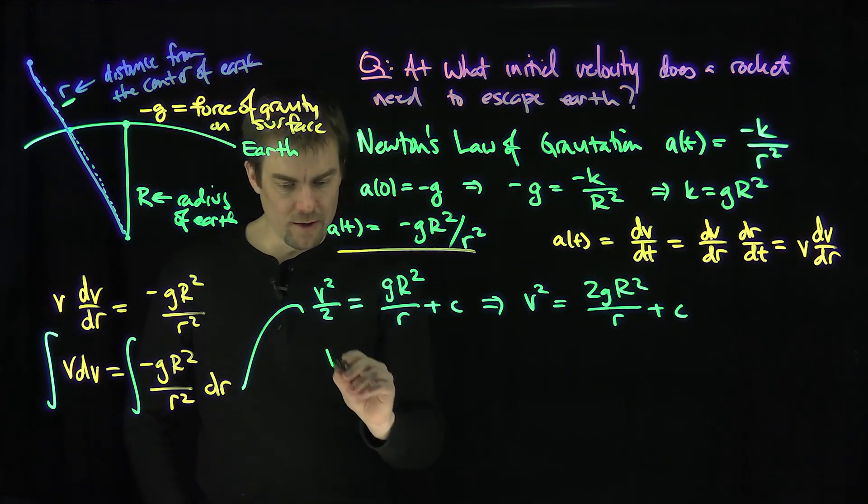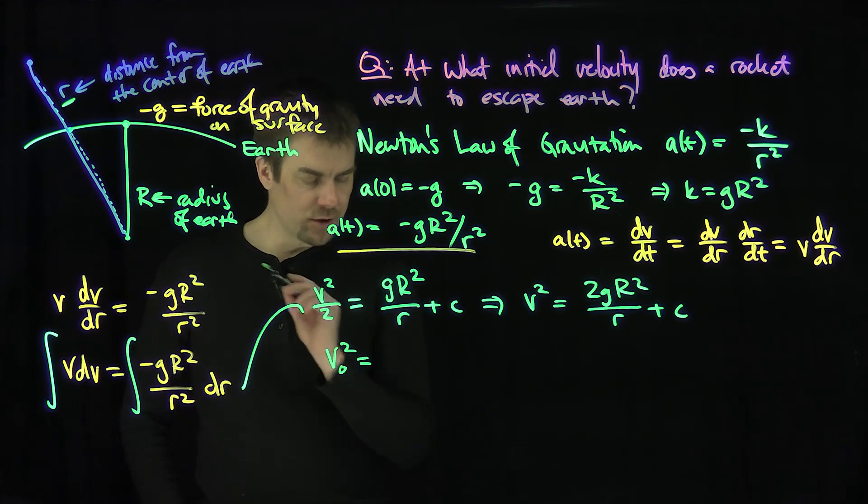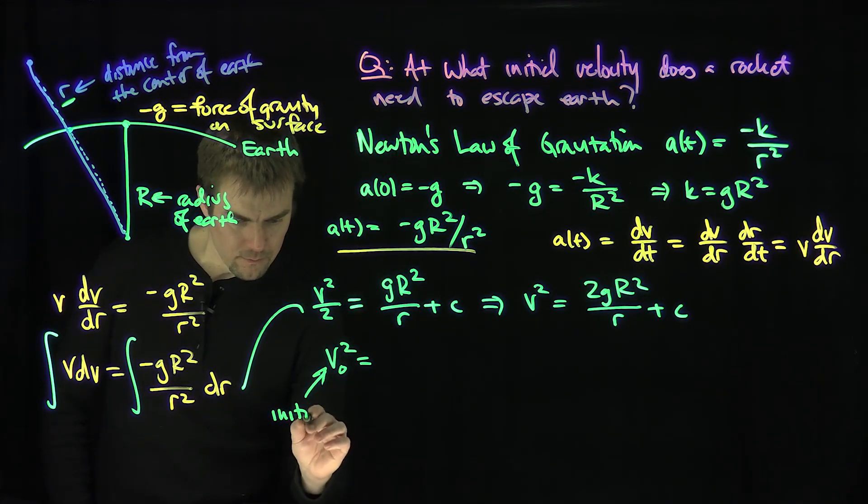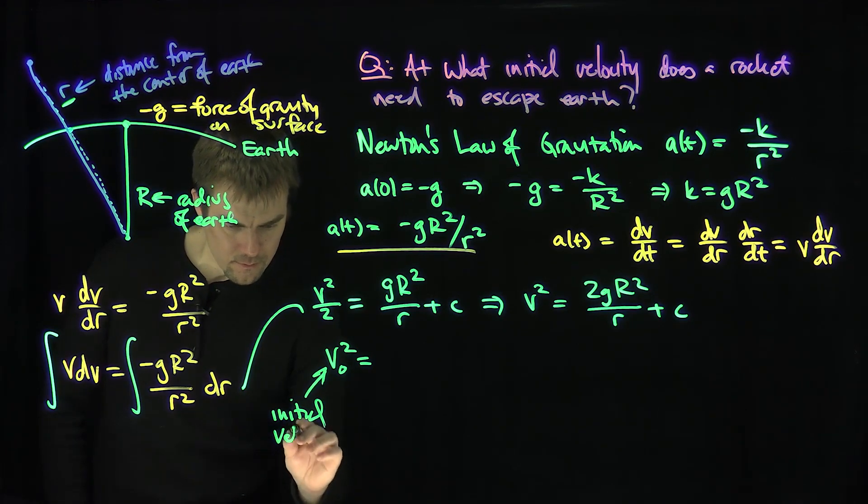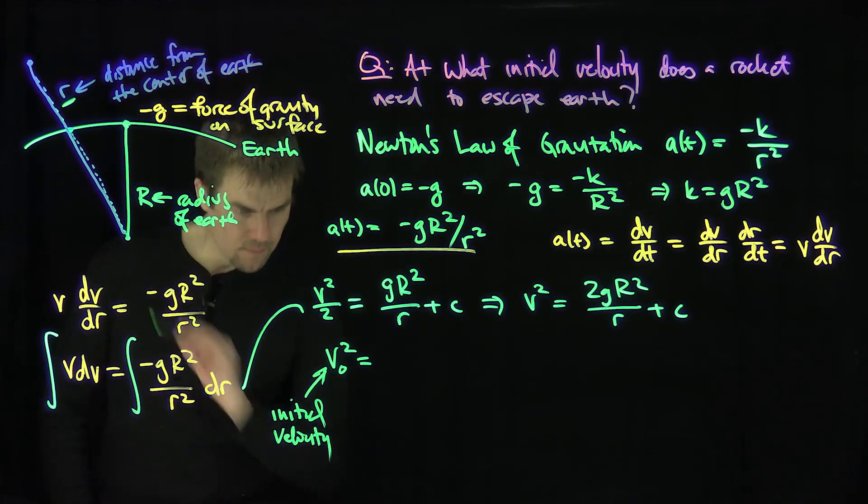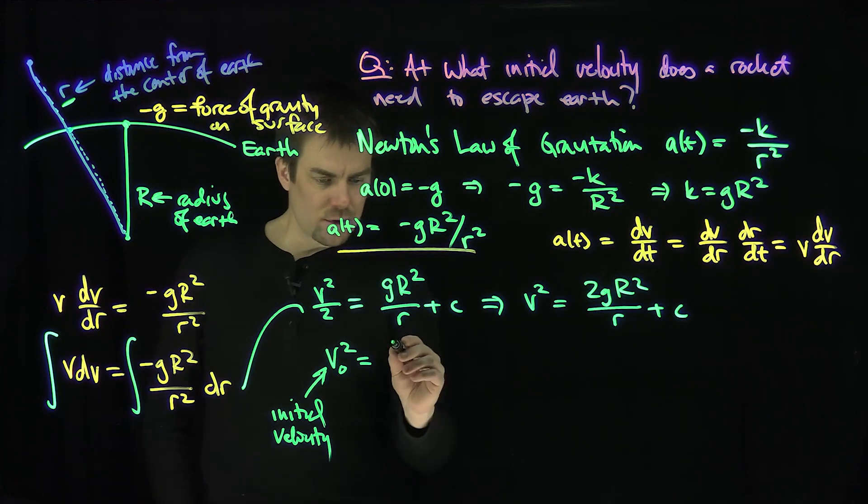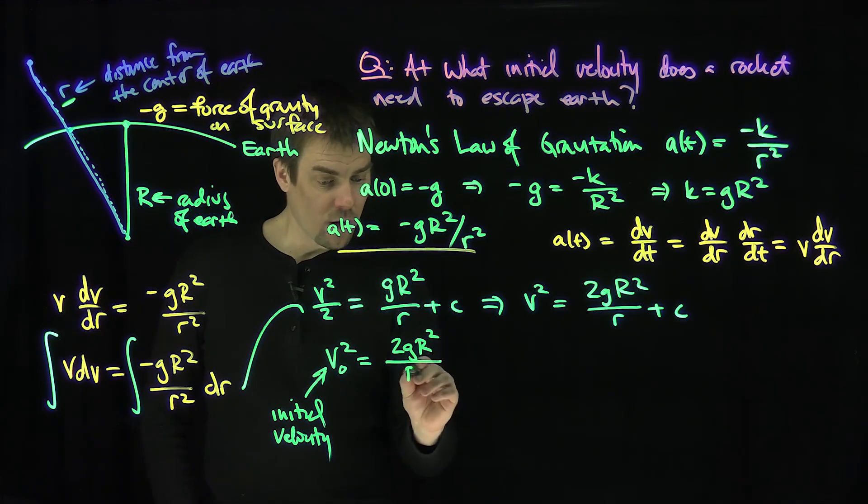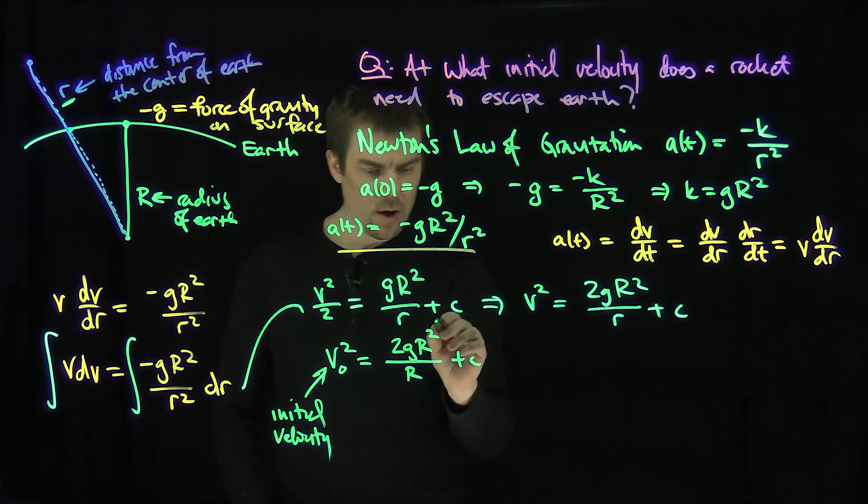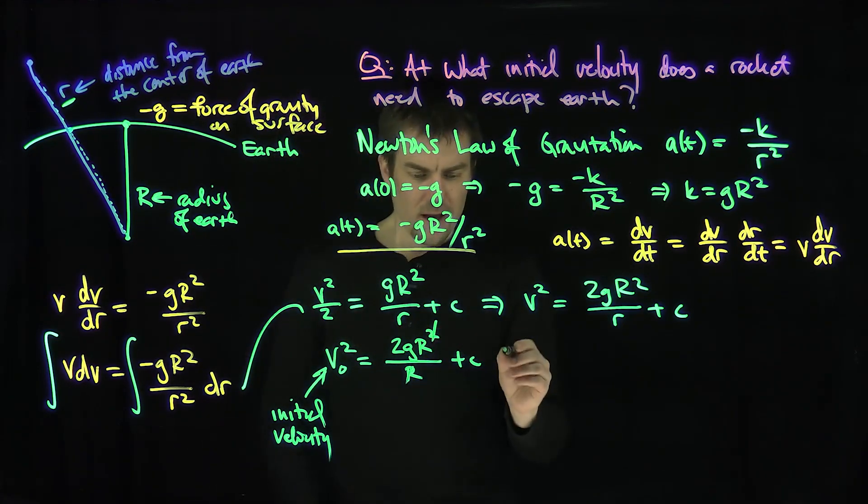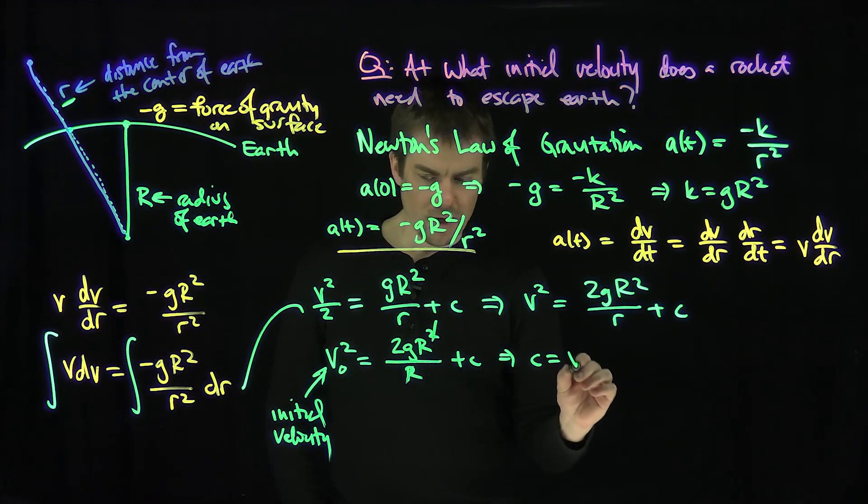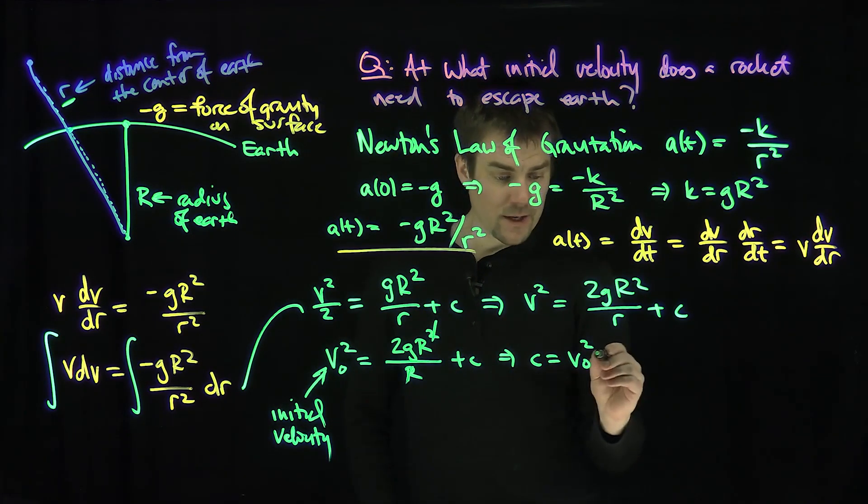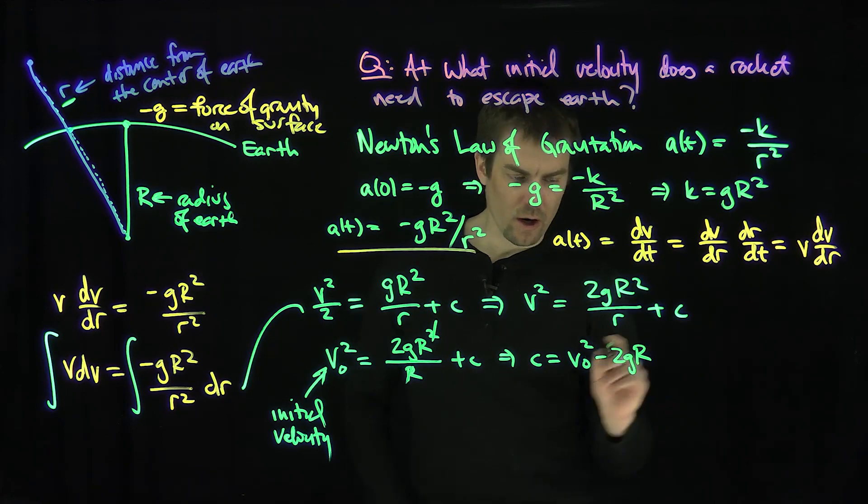So if I plug in time 0 to this equation, I get that v0 squared, the initial velocity, is going to be 2gR squared over R capital plus c. One of those r's cancels out. And therefore, we get that c is going to be v0 squared minus 2gR capital.